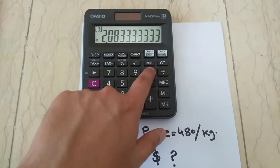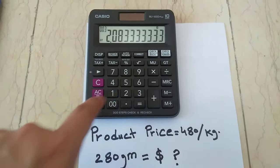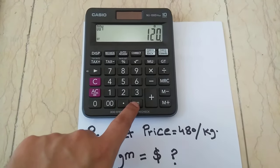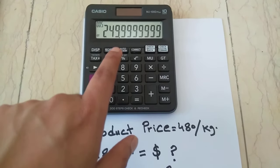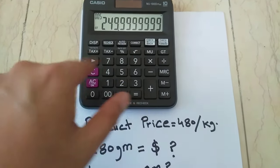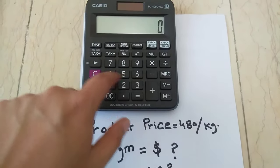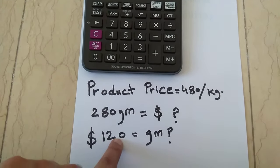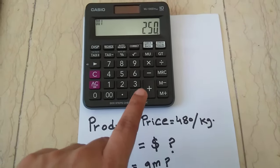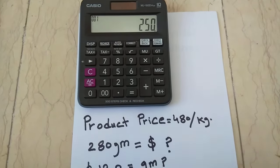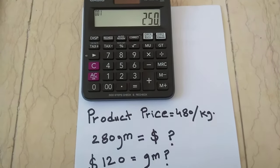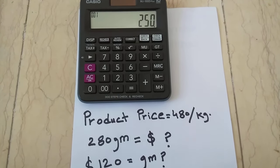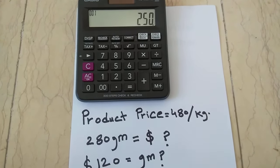Then take 2.08 and multiply it by 120. That gives you 249.99, which you can round to 250. So when you spend 120 dollars, you will get 250 grams of that product.